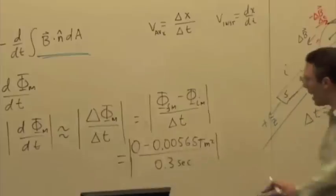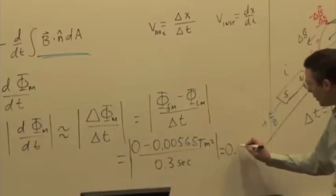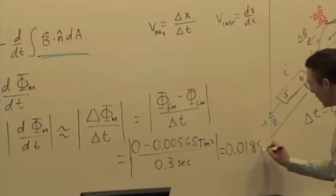And this is the absolute value, so we're not going to worry about the negative sign. We already got the direction. 0.0188 volts.